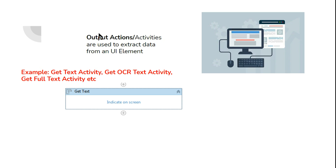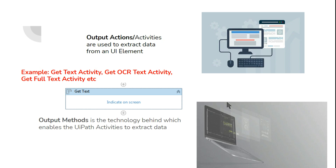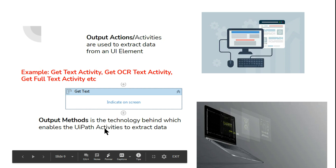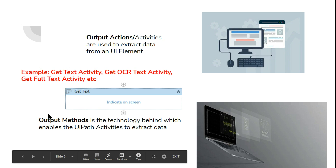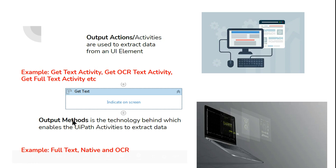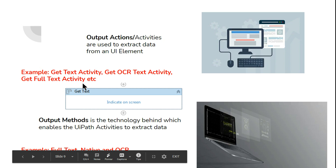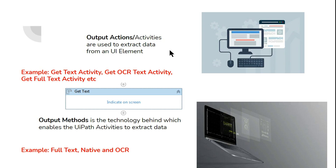The confusion comes when somebody asks you what are the output methods used in UiPath. Output method is the technology behind which enables UiPath activities to extract data. For example, if I'm using Get Text activity, there should be some technology behind which is helping this activity to extract data from a web page or application. That technology is known as output methods. There are three: Full Text, Native, and OCR.